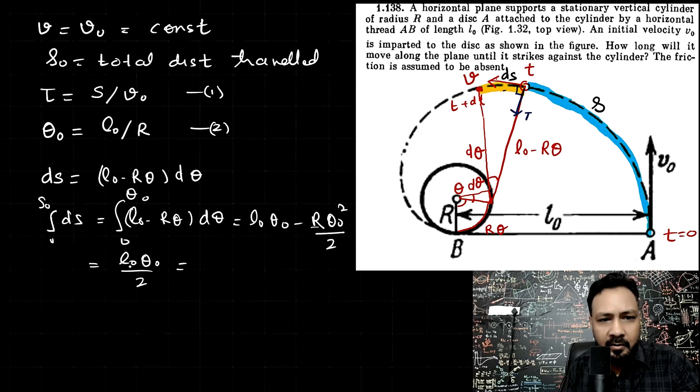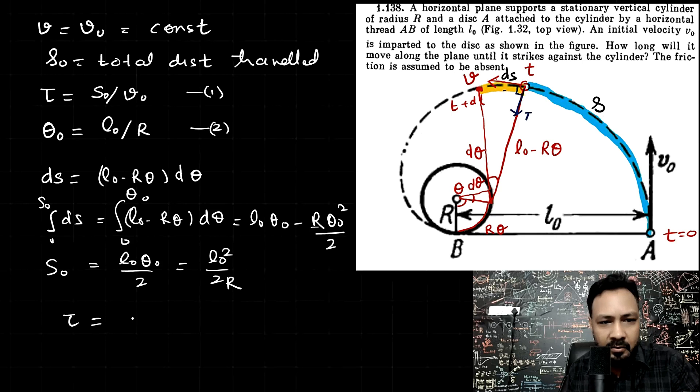So you will get theta naught is L naught by R. So that will be L naught square by 2R. And this is S naught. So now my time will come directly from equation 1. So time to strike the cylinder again is nothing but tau, S by V naught. So S naught by V naught and S naught is this. So this is simply L naught square by 2R V naught. And that is our answer.